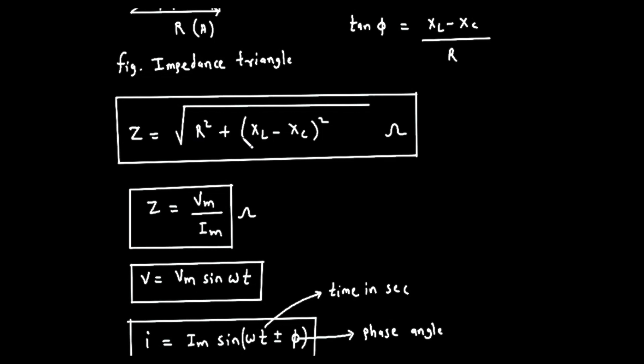This gives us the most important equation in the box. Z equals the square root of the entire quantity of R squared plus, in parentheses, X sub L minus X sub C, all squared.